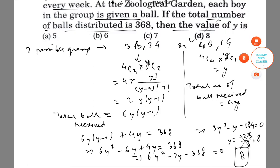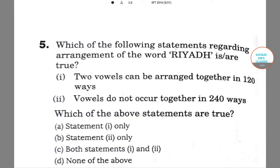The next question is, which of the following statements regarding the arrangement of the word RIYADH is or are true? Two vowels can be arranged together in 120 ways.